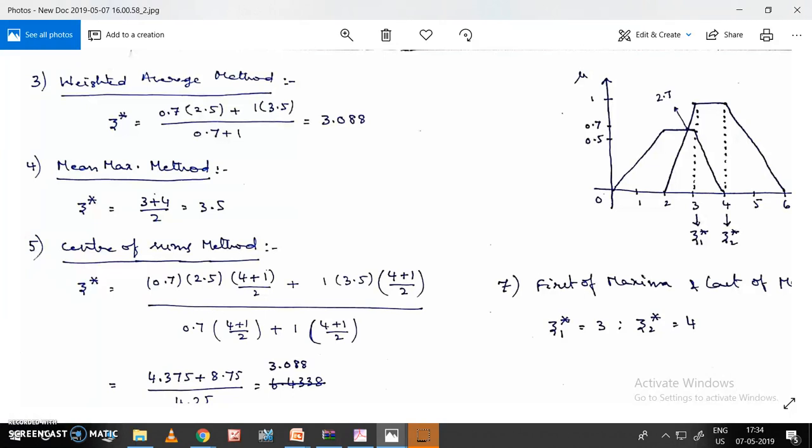The maximum value is 0.7, so those two should be multiplied, plus the same thing for the other fuzzy sets. This is divided by all the y values: 0.7 plus 1. This gives 3.088.